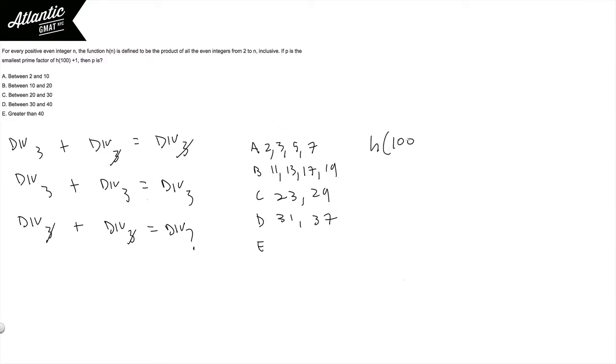So let's think about our h of 100 again. And let's think about whether these primes are factors of this. We know that our h of 100 is just those positive even integers from 2 to 100. So we can just list out a bunch of them, and then we know we go all the way up to 100.